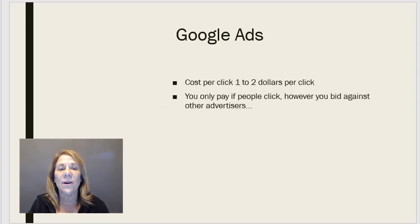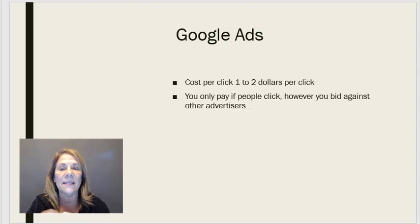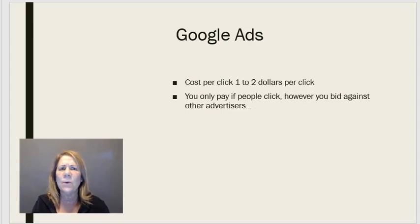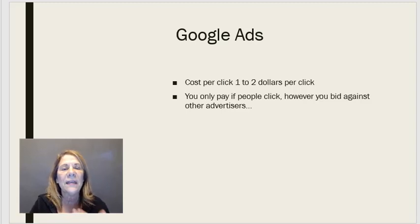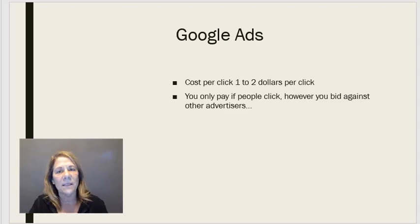Google Ads are actually a bit more expensive — about one to two dollars per click, and you only pay when there's a click. But you have to bid against other advertisers. If you're in the health and fitness industry, that's extremely competitive. Same thing with making money online, affiliate marketing, or passive income — extremely competitive. You'd be fighting against people who are already rock stars with lots of money. So if you're small and just starting out, I suggest trying to get those leads without buying ads.